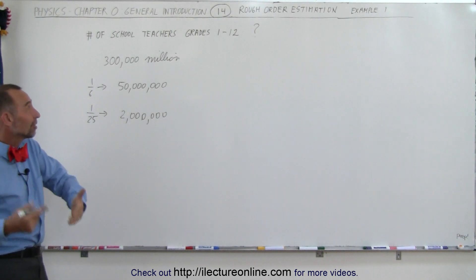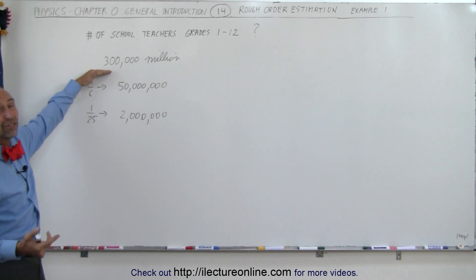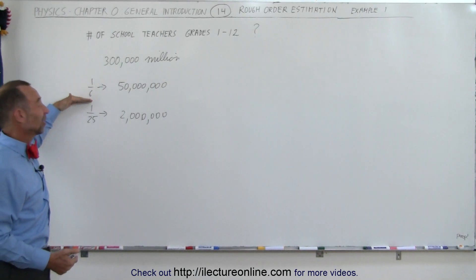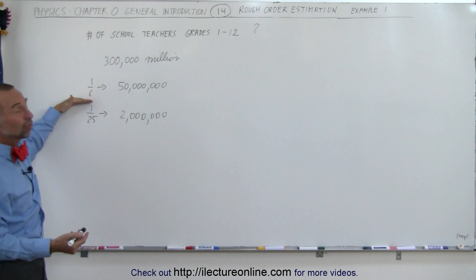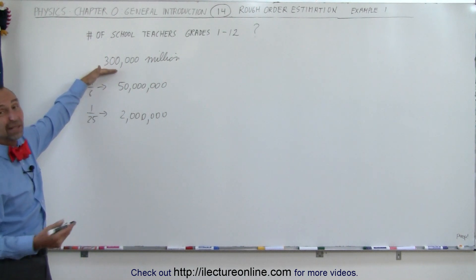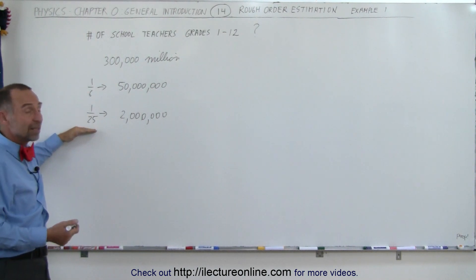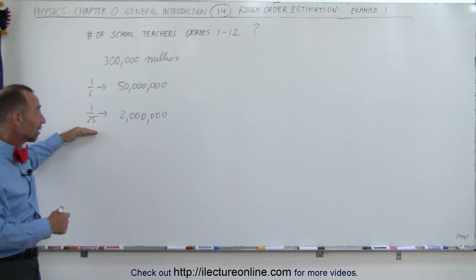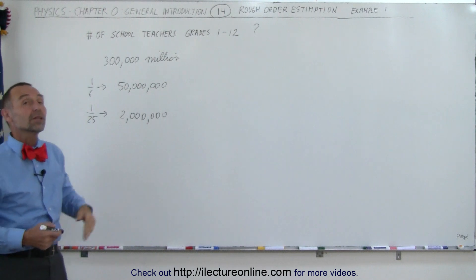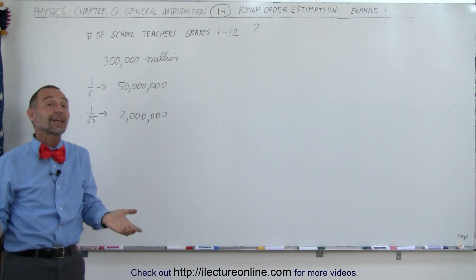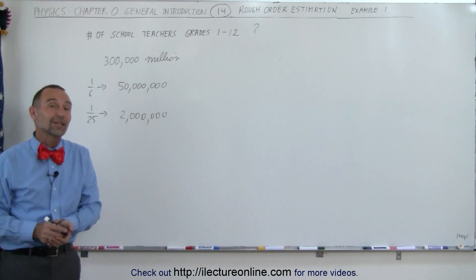Again, it's a couple of very simple calculations. A rough estimate as to how many people live in the country, a rough estimate as to how many students make up from that population, let's say about one-sixth. And then estimate that's about 25 students per classroom, so you need one teacher for every 25 students, so you need about 2 million teachers. And that's probably not that far off from the actual number of teachers in the country.